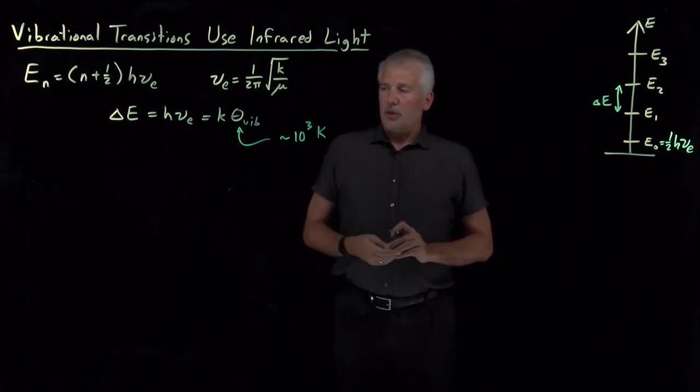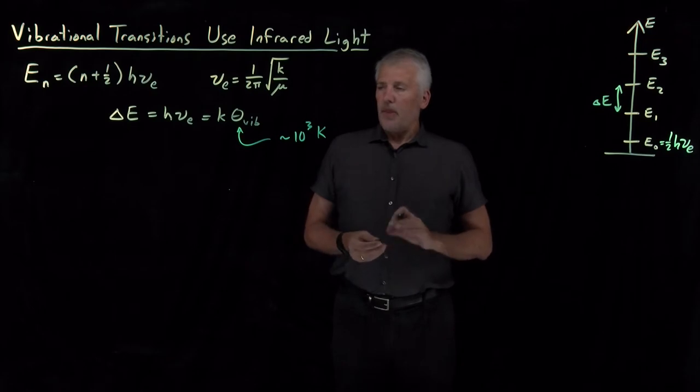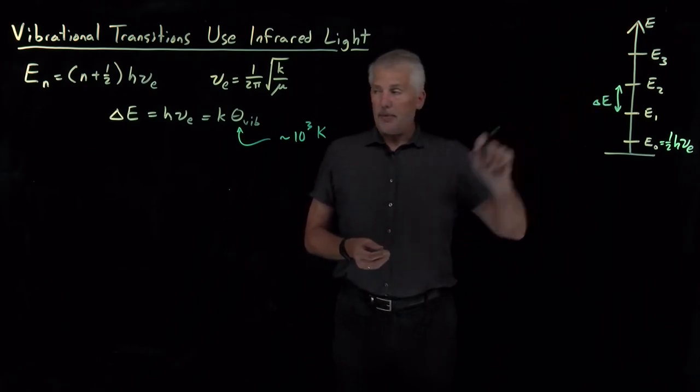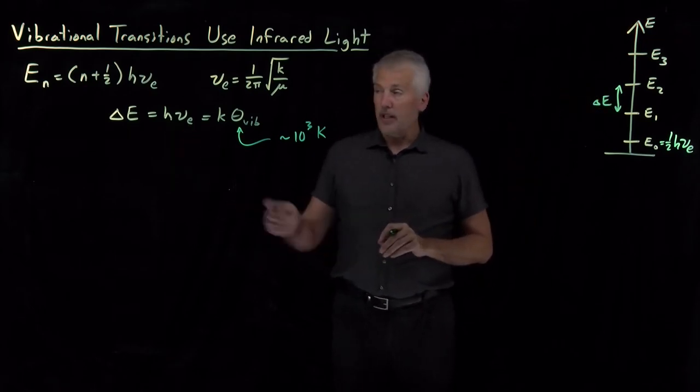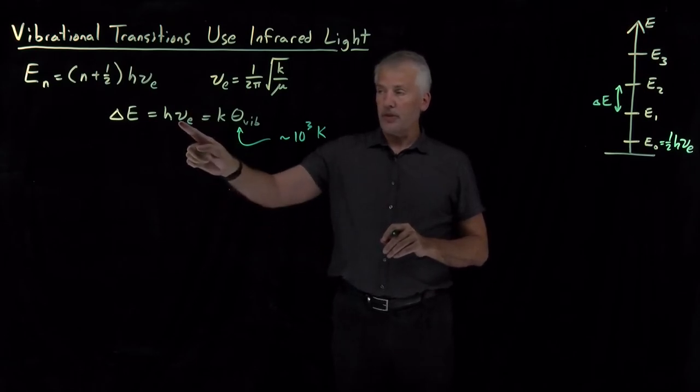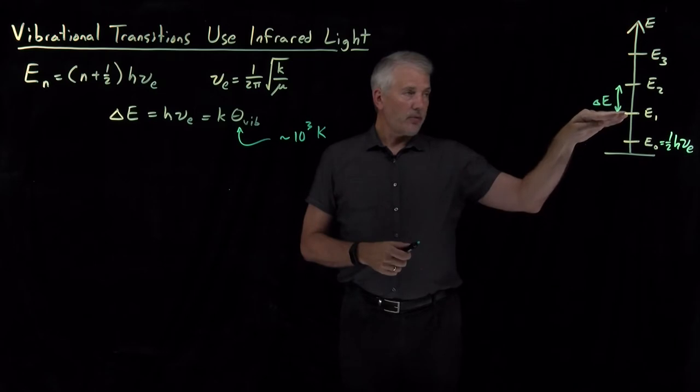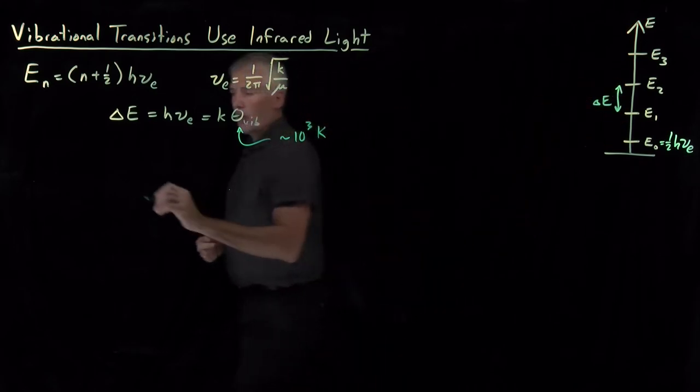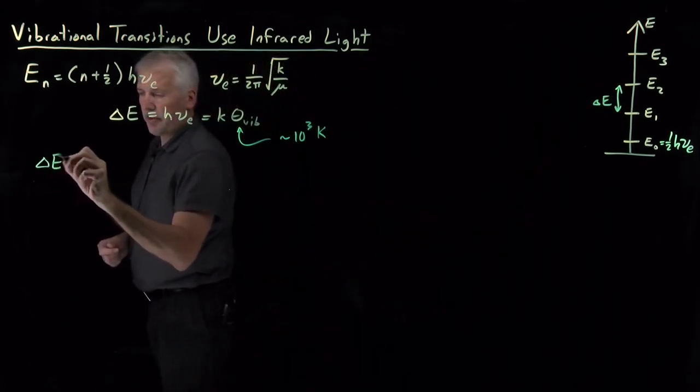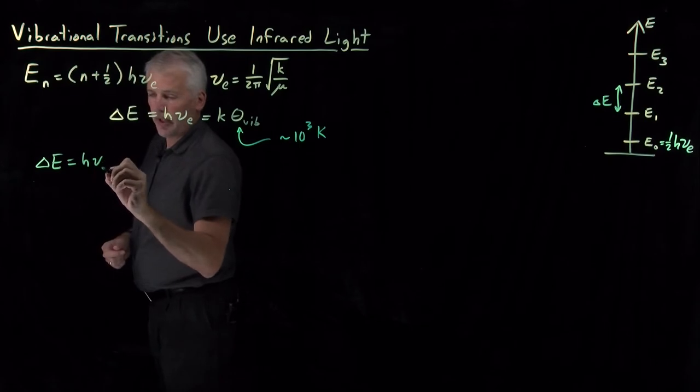That raises the question, how big are these energy gaps? Of course, they're h times nu, but what is that frequency? With what frequency of light would we need to excite a transition from this state up to this state? Or equivalently, if that gap in energy is equal to h times nu, we would like to know what is that nu?